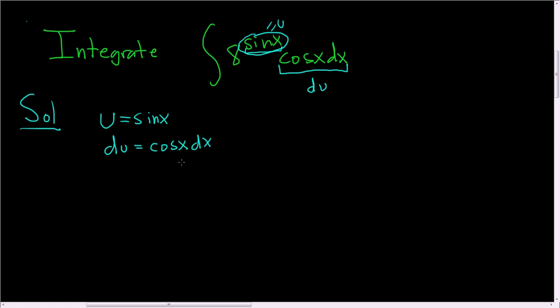So we can rewrite our original integral as follows: This is 8 to the u, du. When you integrate this using a formula, it's simply 8 to the u divided by the natural log of 8, plus a constant.